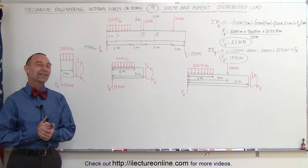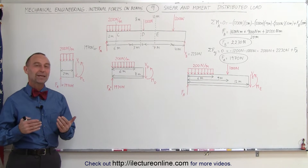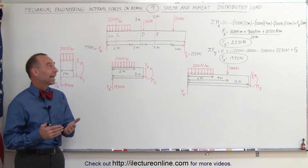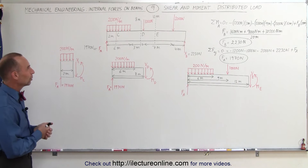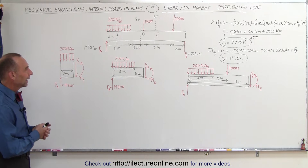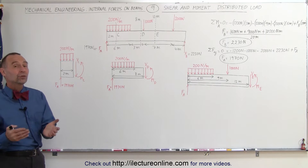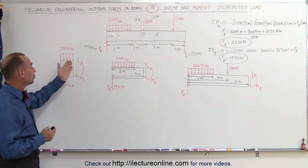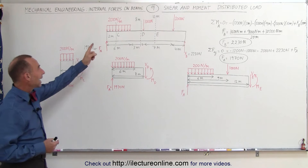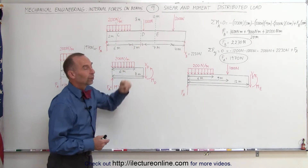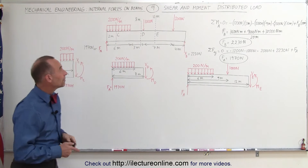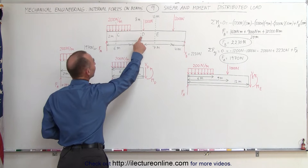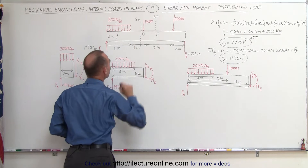Welcome to Electron Align. Let's take a look at a beam that has several point loads and a distributed load. We're trying to find the shear force and the moment at three different locations on the beam: at C, at D, and at E.